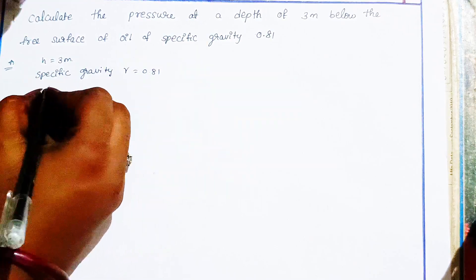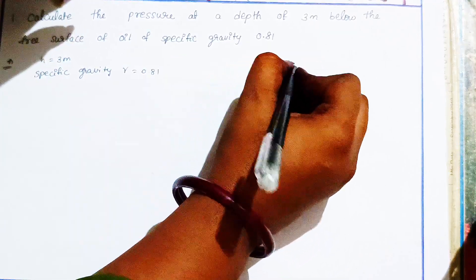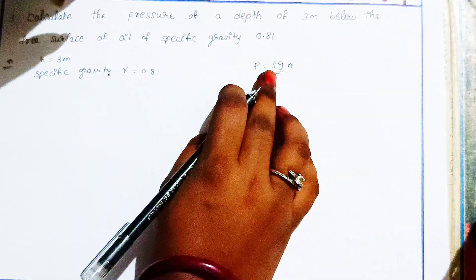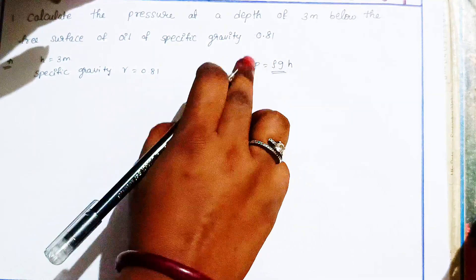P equals ρ_z h, where ρ_z is specific weight. We have specific gravity and need to convert to specific weight to calculate pressure.